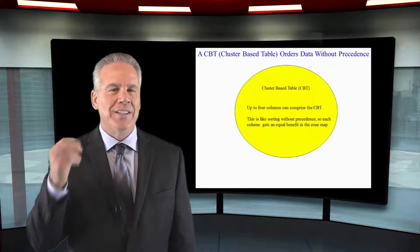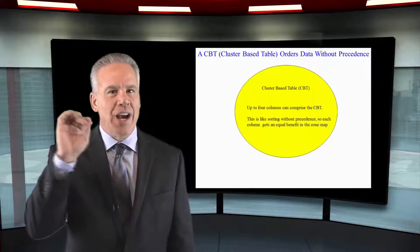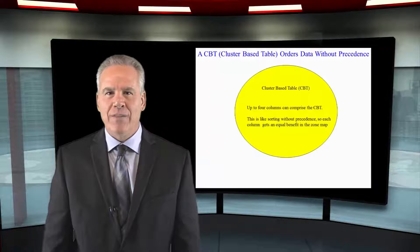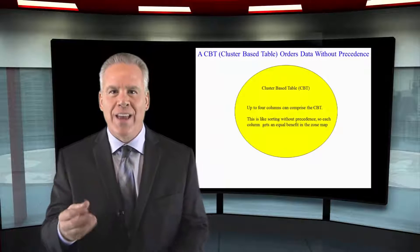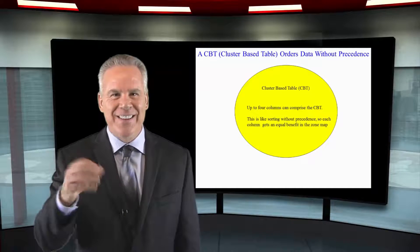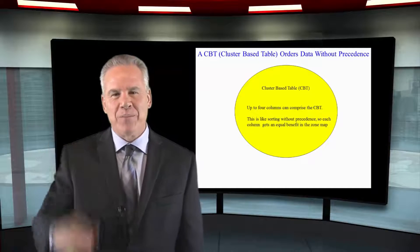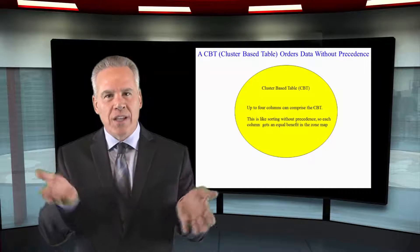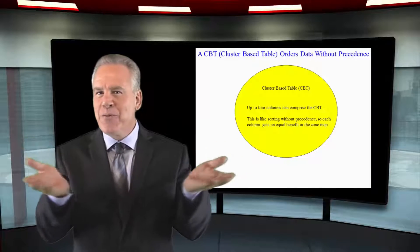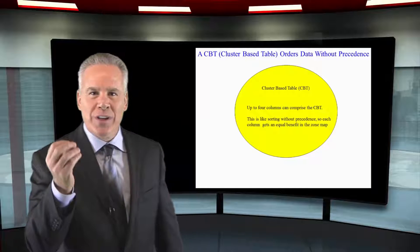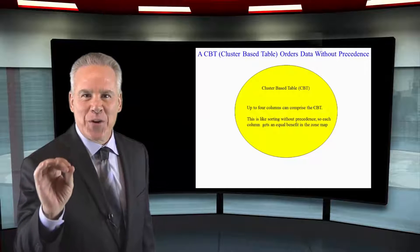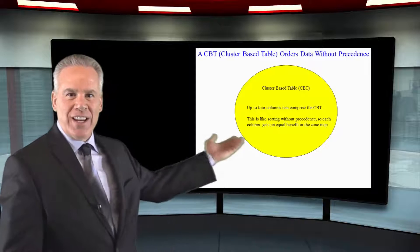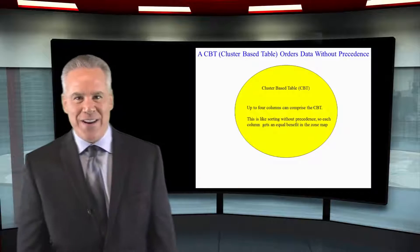We just saw a table that had a double sort — a major sort and a minor sort — and of course the major sort had precedence, the most power. Now, when you need up to four columns to have an equal precedence, you can create a cluster-based table, and that's what you're going to see in our next example.